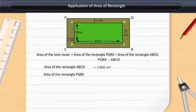Area of Rectangle PQRS equals 50 times 35, which equals 1750 square meters.